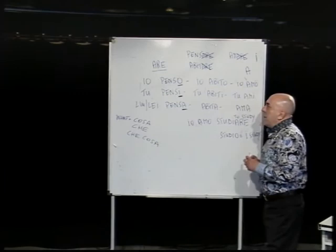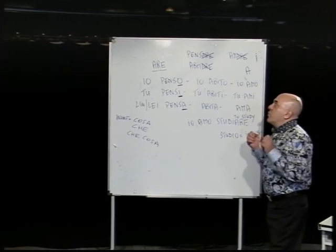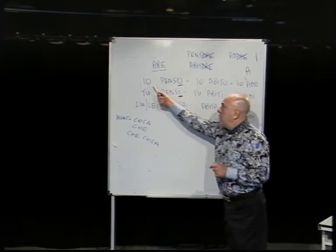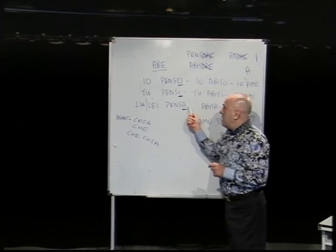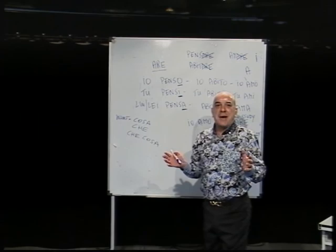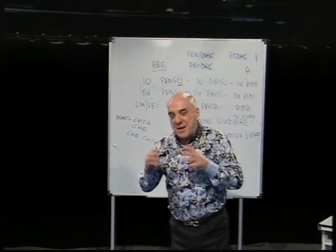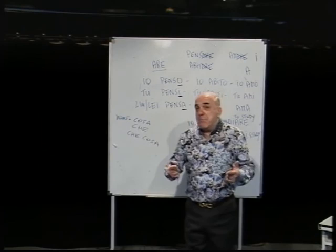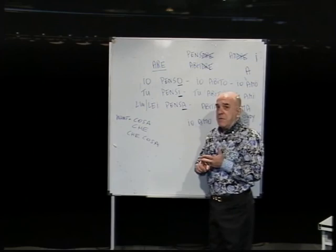To summarize: it is very important that when you use a subject, you remove the last three letters -ARE and then add O for io, letter E for the subject tu, and letter A for the subject lui or lei. Thank you very much, this is the end of the lesson. In the next lesson we will cover three more subjects: noi (we), voi (you all), and loro (they), and we will see what letters to add. Thank you for following this lesson.